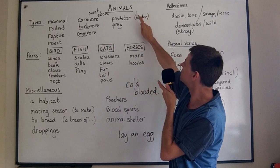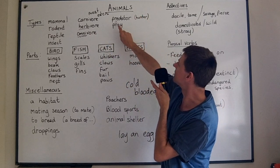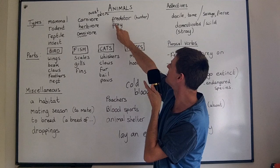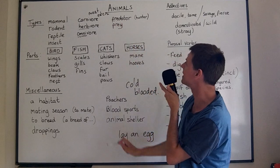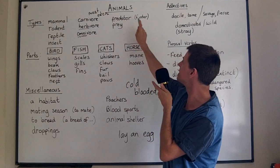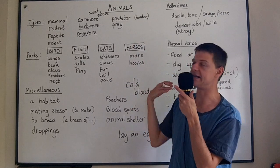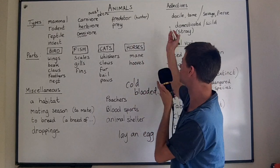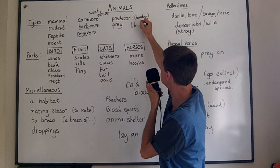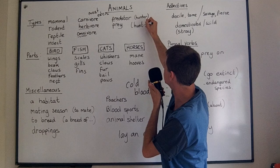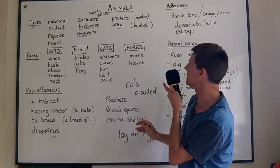Two other types of animal categories are predator and prey. The predator is the hunter, and it hunts the prey, which is the hunted — the poor animal which will be eaten.